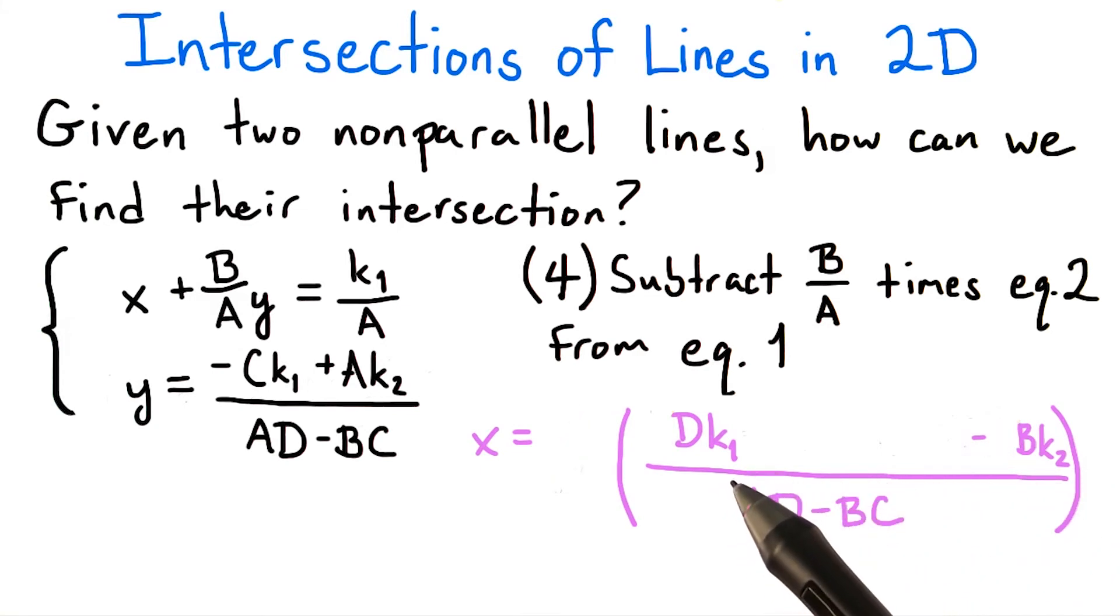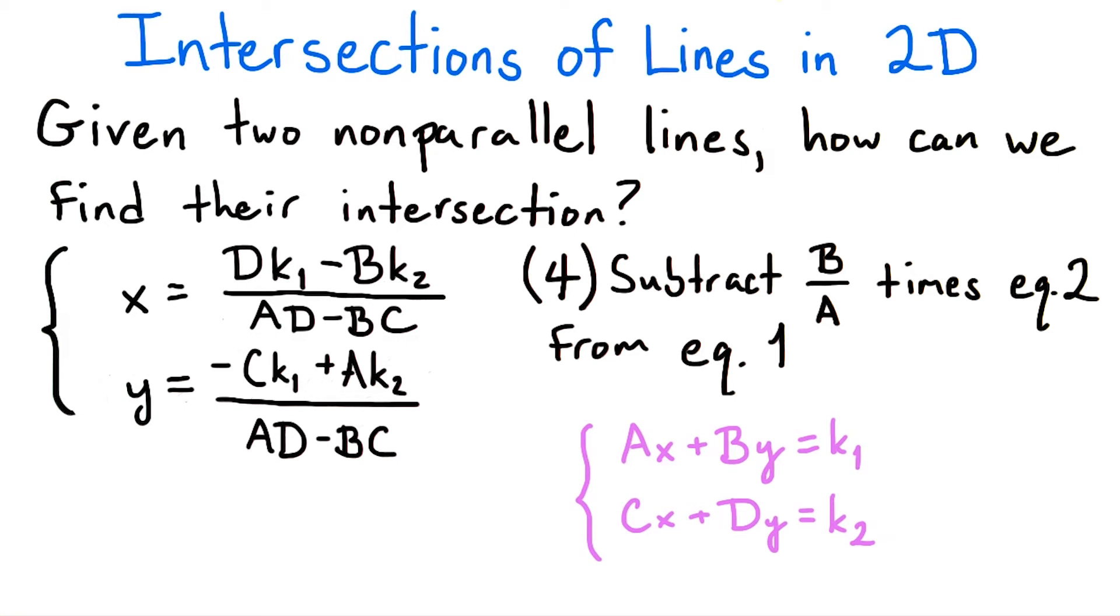So the point of intersection of these two lines, ax plus by equals k1 and cx plus dy equals k2, assuming they're not parallel lines, is this point: x equals dk1 minus bk2 over ad minus bc and y equals negative ck1 plus ak2 over ad minus bc.